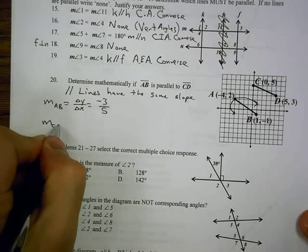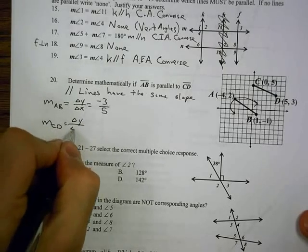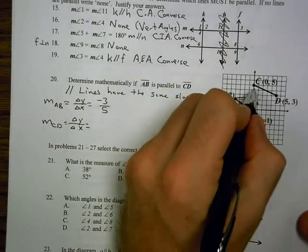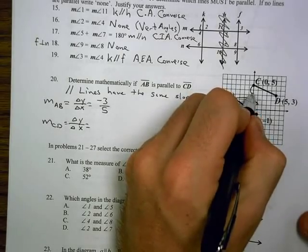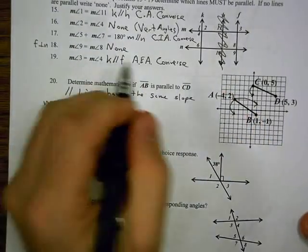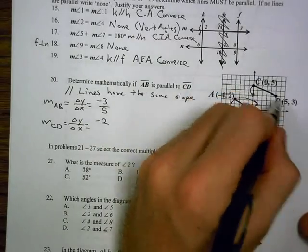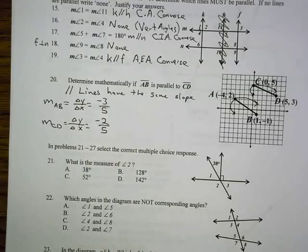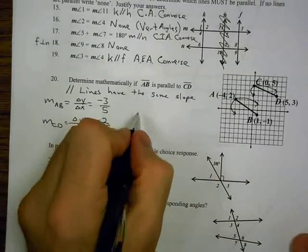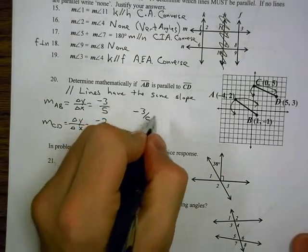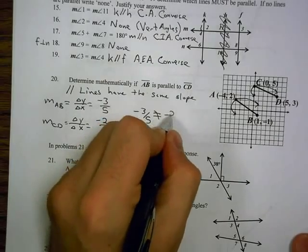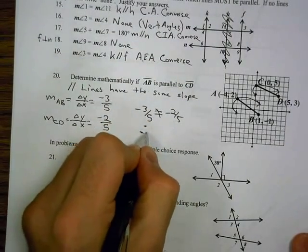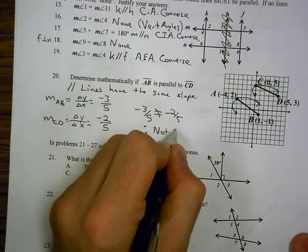My slope from C to D, change in Y over change in X. My change in Y, I went down from 5 to 3. So, I went down 2. And my change in X, I went from 0 to 5. So, I went 5 to the right. So, I get negative 2 fifths. And we can clearly see that negative 3 fifths is not equal to negative 2 fifths. Therefore, not parallel.